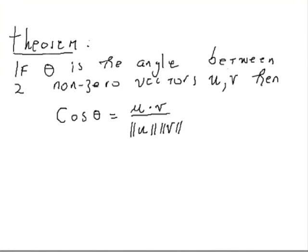All right, so what I want to prove today is that if you have a vector u and a vector v, the angle between the two vectors is given by the following expression. So I want to prove that if theta is the angle between two non-zero vectors u and v, then cosine of theta is equal to u dot v divided by the norm of u times the norm of v.